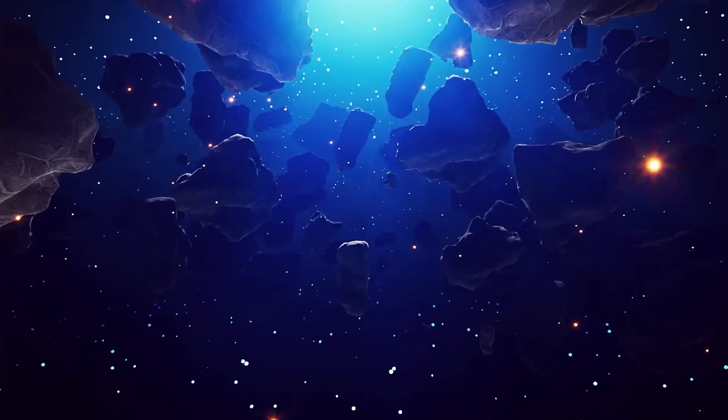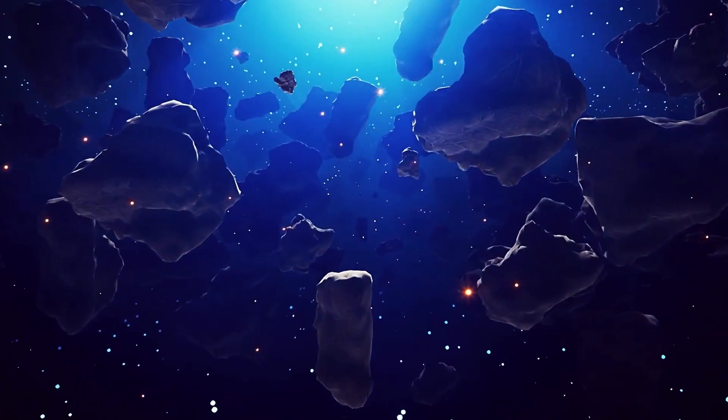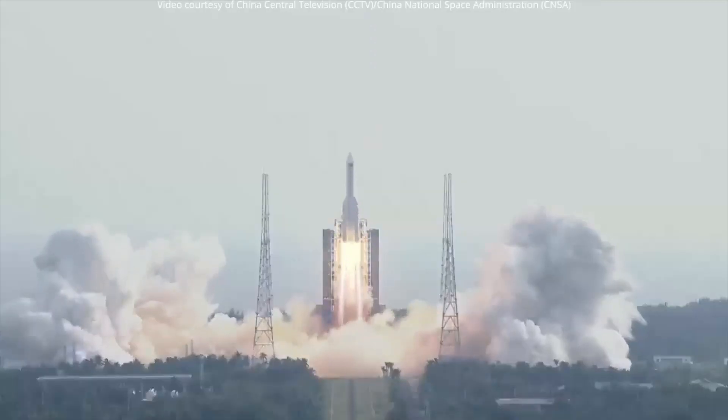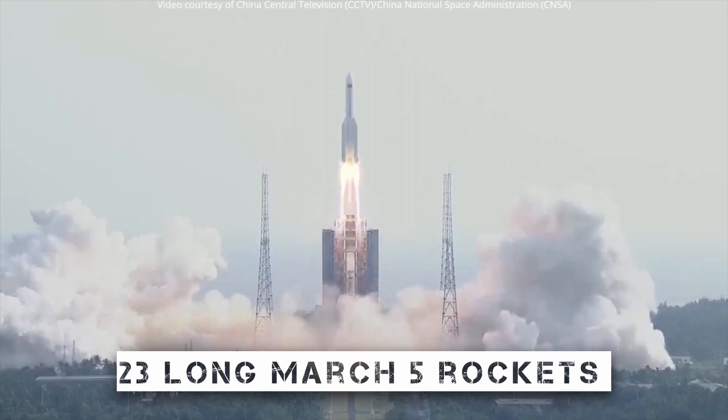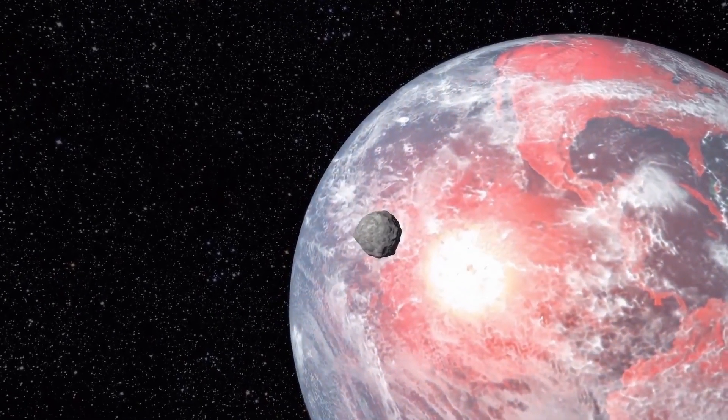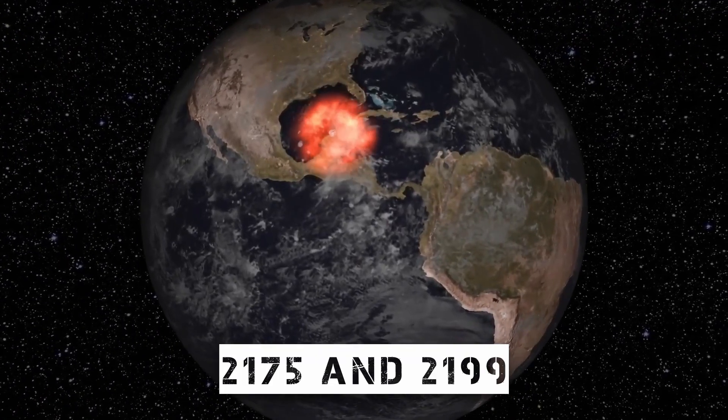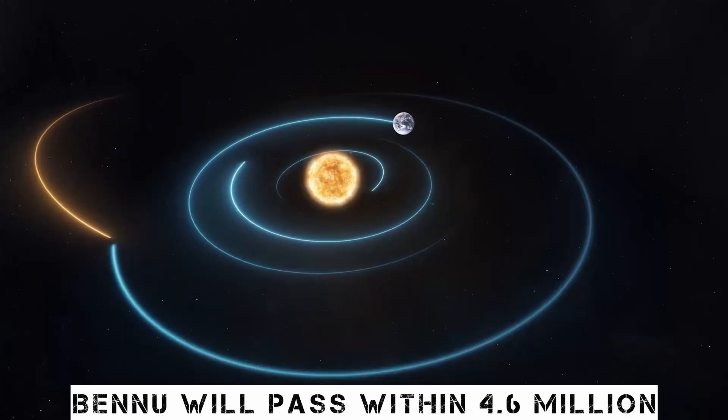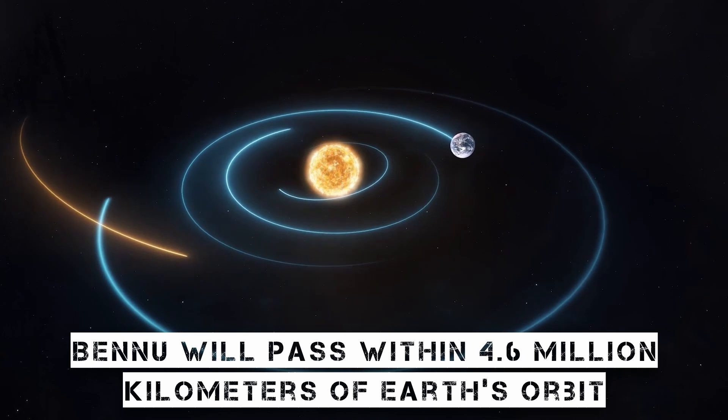Asteroid redirect missions may already be in the early phases of development, according to China. The country plans to launch 23 Long March 5 rockets toward the asteroid Bennu in an effort to divert it from a possibly disastrous collision with Earth between the years 2175 and 2199. Bennu will pass within 4.6 million kilometers of Earth's orbit.